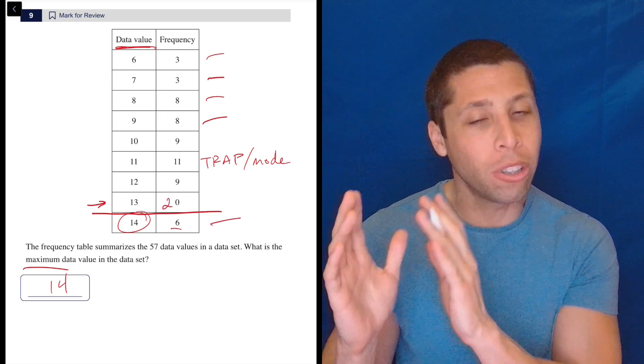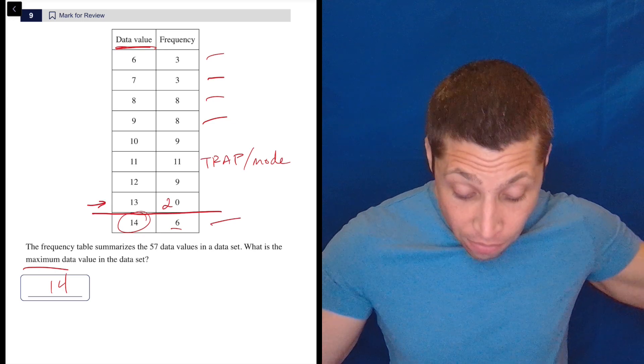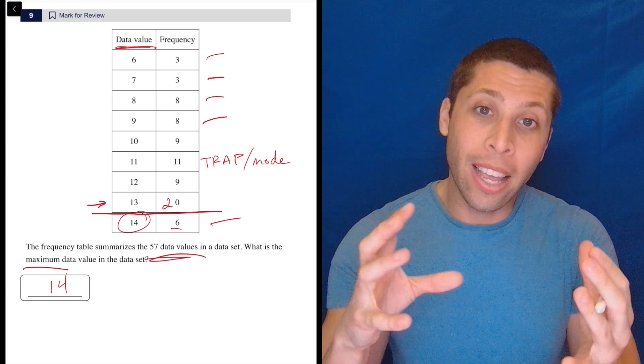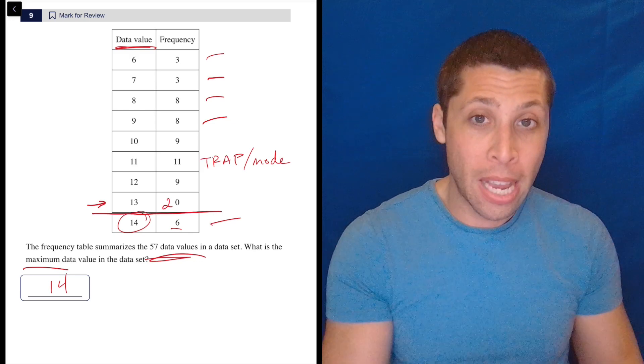Frequency charts are telling you, usually on the left, what the values are in the set. And instead of listing out 57 data values, we condense it. And we just say the number six is repeated three times. The number seven is repeated three times.